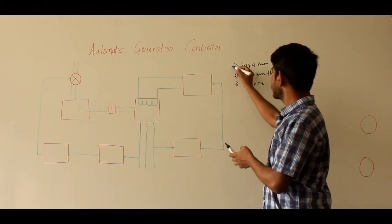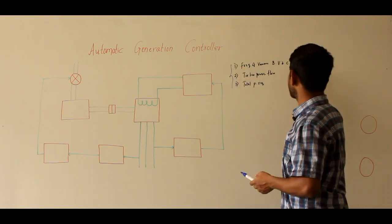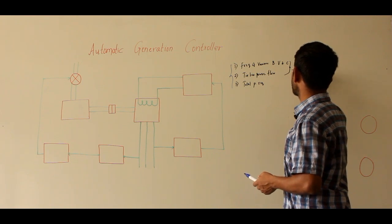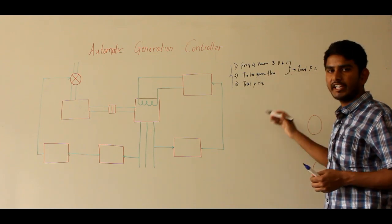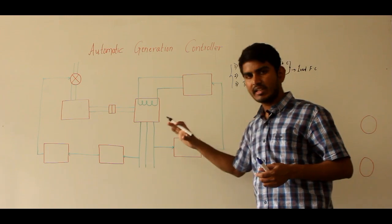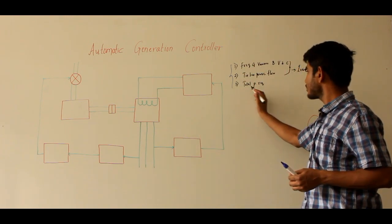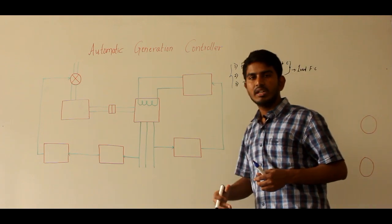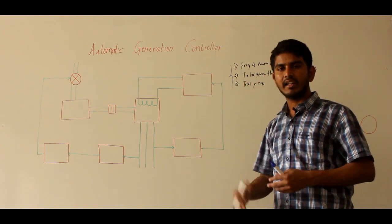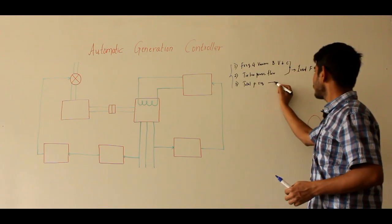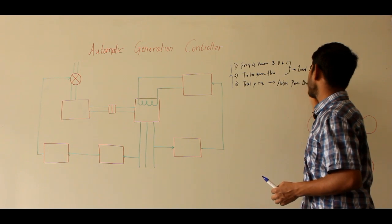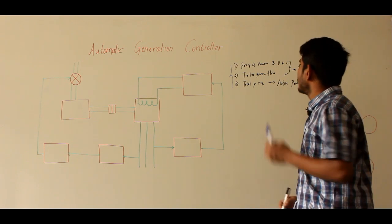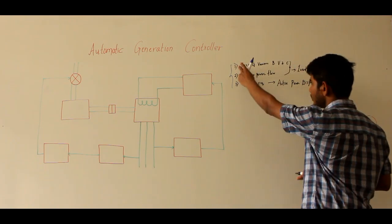AGC ensures these three functions. The first two functions — frequency of various bus voltage and current, and tie-line power flow among the interconnected areas — will be carried by load frequency control. The third function — total power requirement on the whole system must be shared by individual generators at an economically optimal fashion — will be carried by another set of control called active power dispatch, which we are not discussing here.